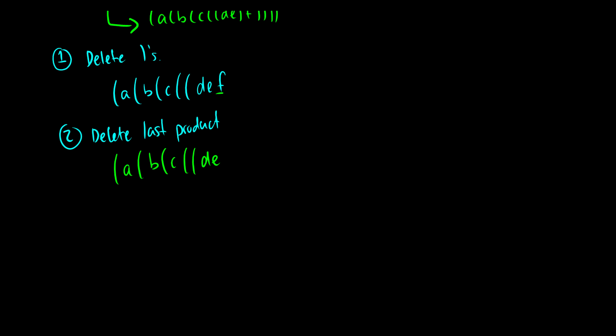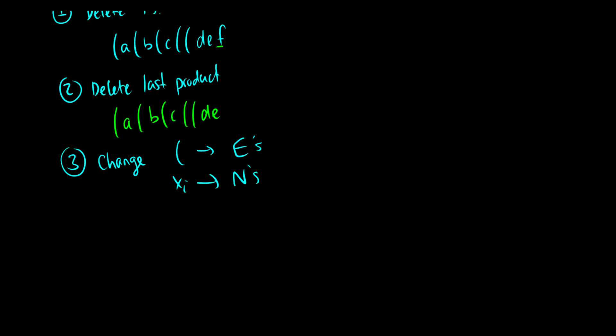Okay. So we're going to have A times B times C times D times E. Now here is the interesting thing here. What we're going to do is we're going to change all the left brackets to E's and all of the letters, which we'll just call x_i, to N's. So this becomes E, N, E, N, E, N, E, E, N, N. What is this? Well, this is, so let's see, how many letters are there? There's 2, 4, 6, 8, 10 letters.